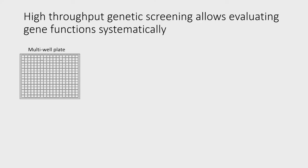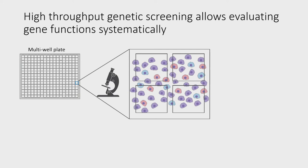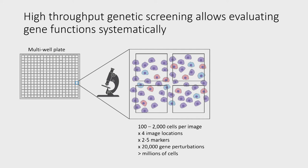For more than a decade now, we've been able to generate these datasets in high-throughput fashion. What's shown here is a multi-well plate where cells in each well are grown independently and we can induce different gene knockdowns. Using automated microscopy, we image different locations in these wells, capturing between 100 to 2,000 cells per image. With four image locations, two to five markers, and 20,000 gene knockdowns, this results in millions and millions of single-cell data points that allow us to understand heterogeneity and gene effects across different cellular populations.